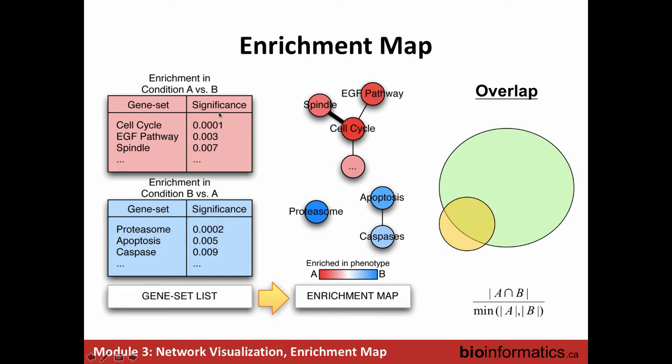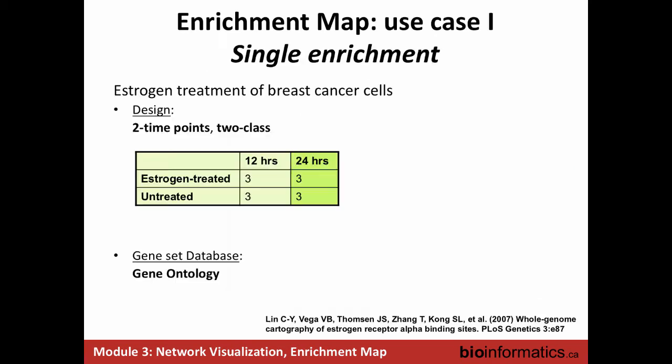The color of the circle is proportional to the significance score. The stronger the color, the more significant. Up-regulated is red, down-regulated is blue. The edges connect nodes - the lines connect circles if there's crosstalk among the pathways or if the pathways share genes. You might see this if you have multiple versions of the pathway from different databases. Many databases will have a pathway called cell cycle, so you'll see all of them coming back highly related to each other.